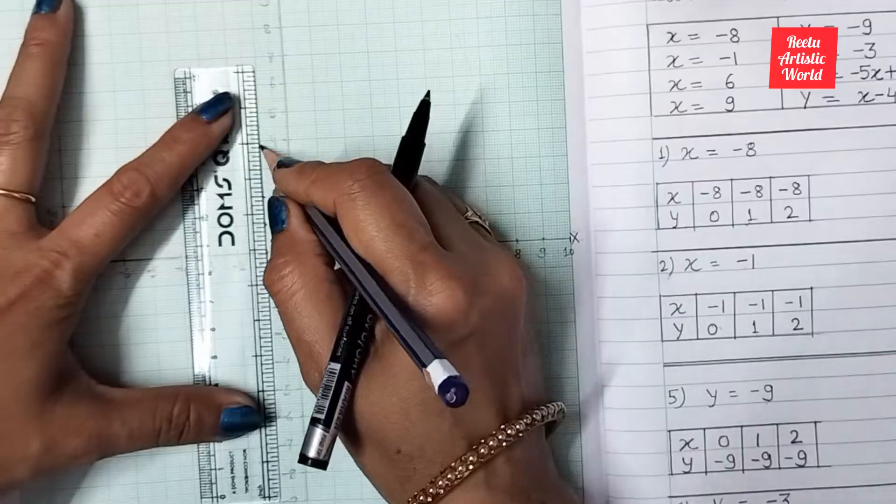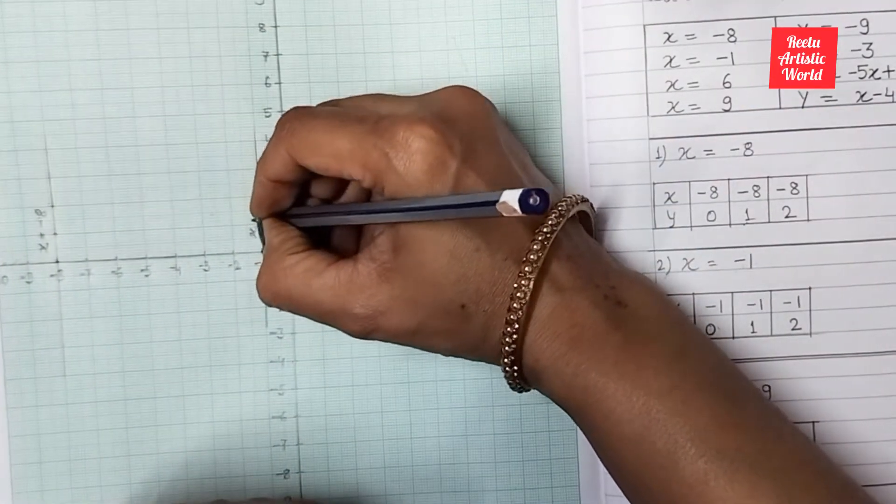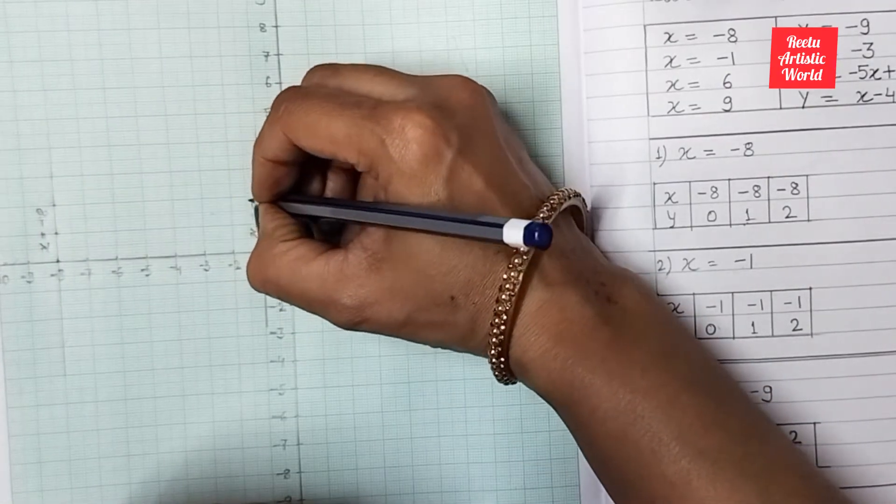This line is also parallel to y-axis. There are infinite points of y for x is equal to minus 1.